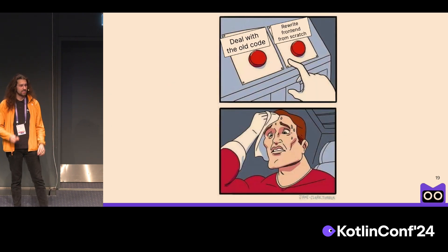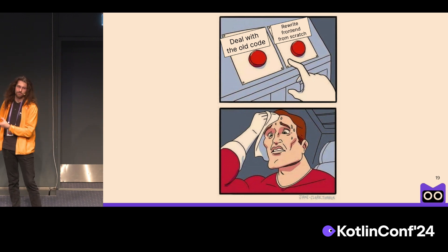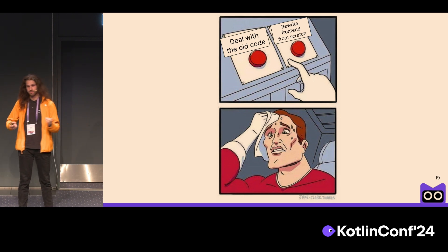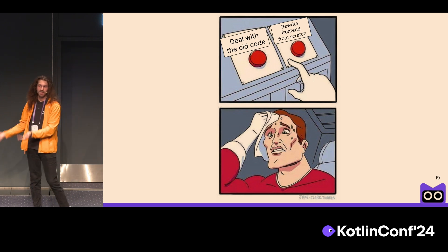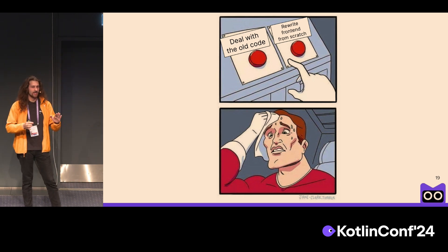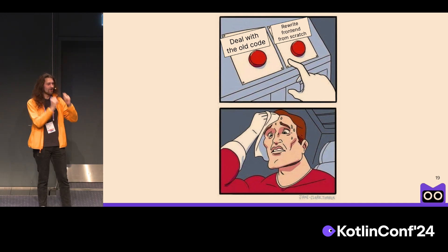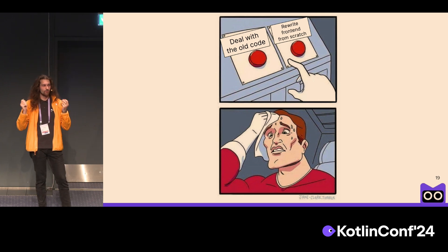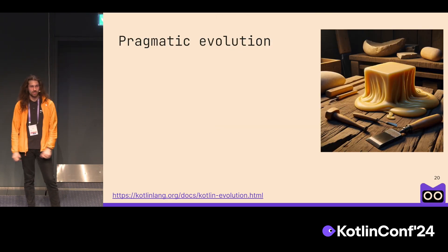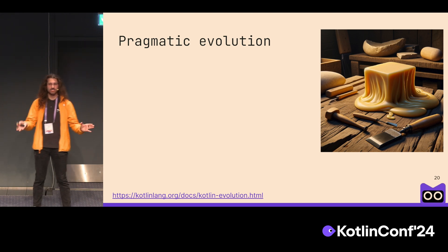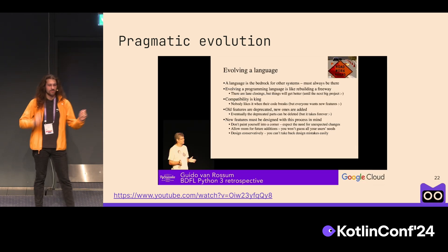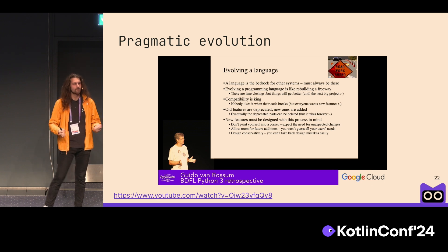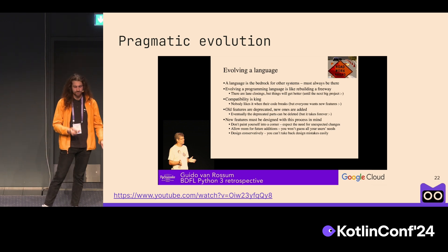The problem is there is a lot of Kotlin code. Imagine you have an API with a really big, wide API surface used by a million apps — different apps by different companies, not your own. Now you have to rewrite all that from scratch. You have documentation, old implementation, but still something will break. Yet in Kotlin, we have a set of principles called pragmatic evolution, and one of the major principles is that updates should be comfortable. As Guido van Rossum, creator of Python, said in his Python 3 retrospective video: compatibility is king. We in the Kotlin team know that and we care for it.